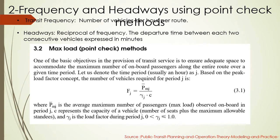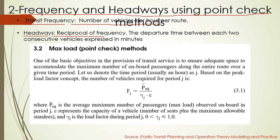Our second topic is frequency and headways using point check methods. This topic is very popular in public transportation planning systems and preparing schedules. The transit frequency is the number of vehicles per hour per route. The headway is the reciprocal of the frequency — it is the departure time between each two consecutive vehicles, expressed in minutes during one hour.